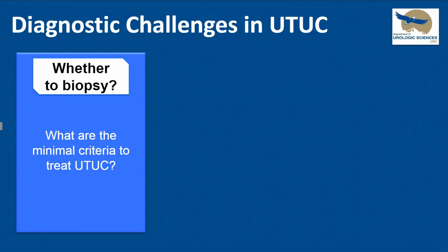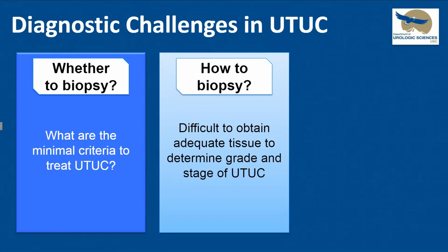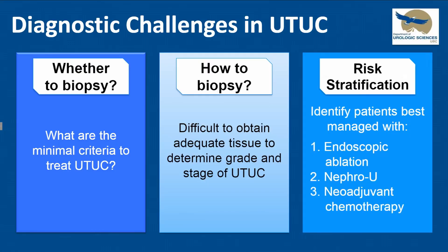The big issue with upper tract urothelial carcinoma is whether we need to get tissue and how we get it — whether to biopsy, what criteria do we need to treat it, and is biopsy necessary to treat adequately? If we decide we are going to biopsy, how do we biopsy and what do we do with the information with respect to risk stratification? How do we decide who's going to get endoscopic ablation, who's going to get a nephroureterectomy, and who's going to get chemotherapy before nephroureterectomy?